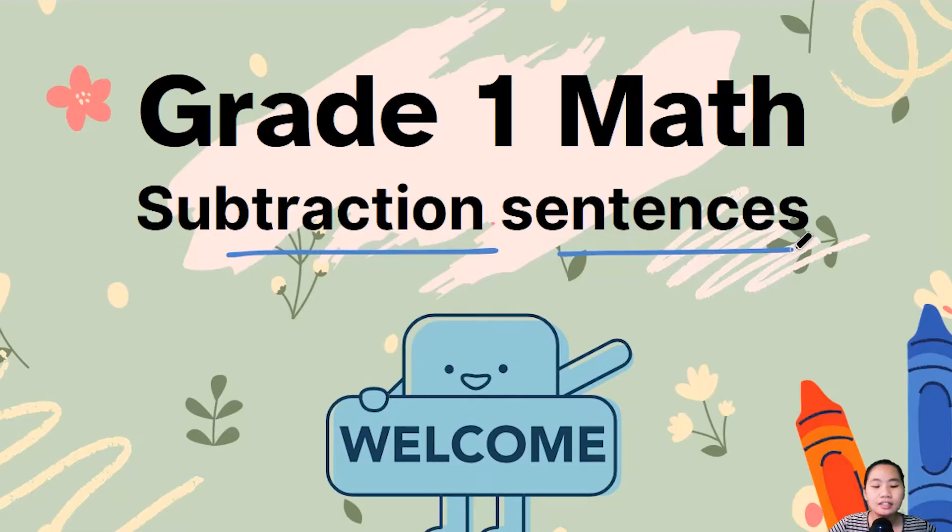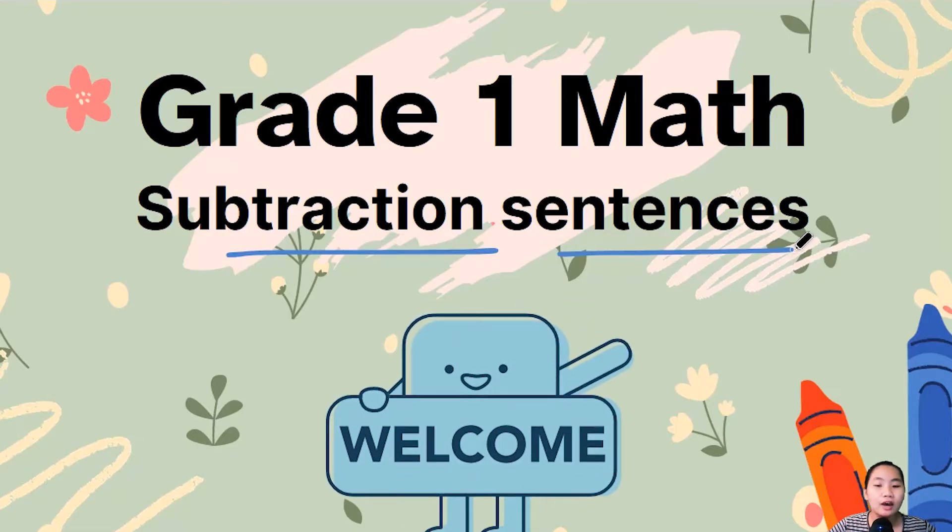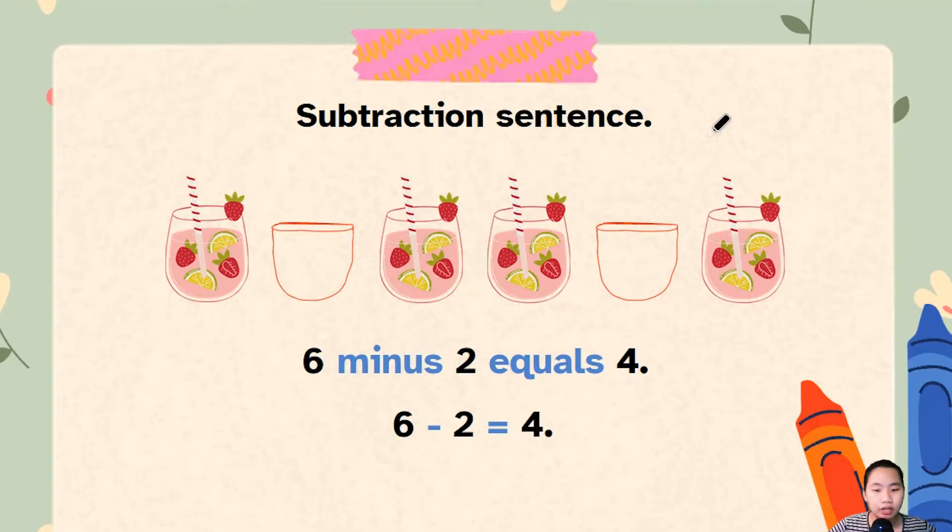How to write the equation for subtraction and how to say it out loud. First off with subtraction sentence, I have a bunch of glasses with fruit juices in here. Now I have six of them. One, two, three, four, five, and six.